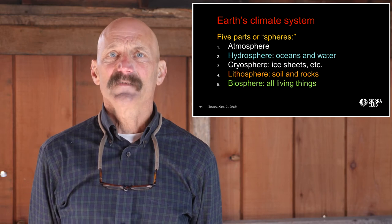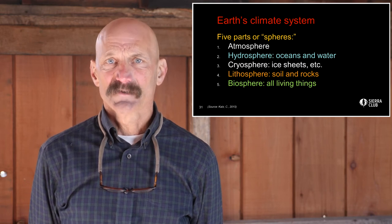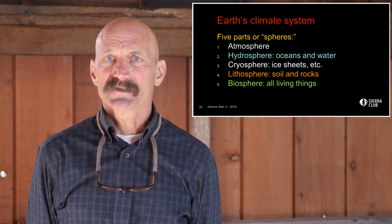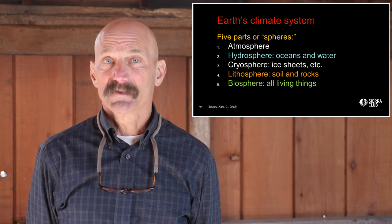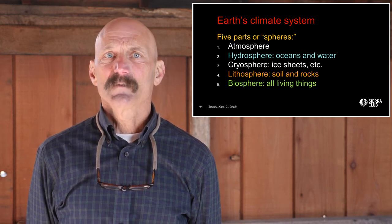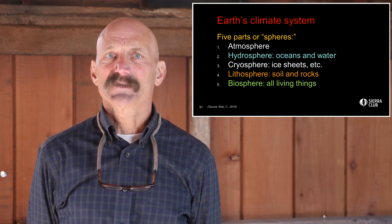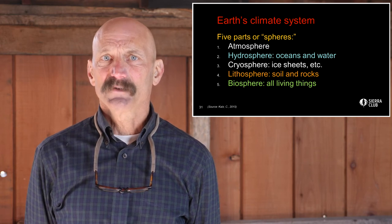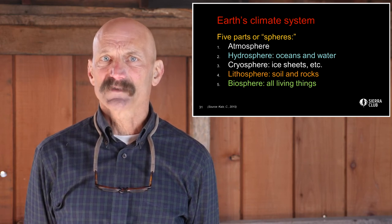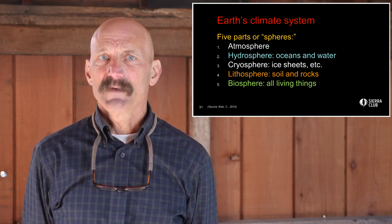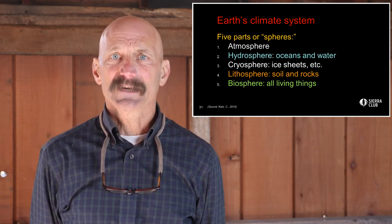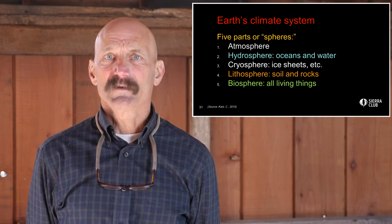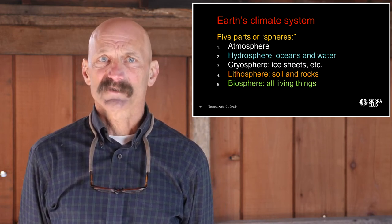These five spheres all interact. The oceans — the hydrosphere — for instance, have absorbed over 90% of the excess heat caused by climate pollutants in the atmosphere, masking and delaying by decades the full climate effect of those pollutants.